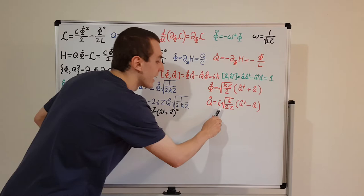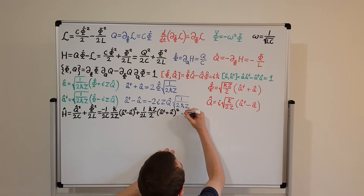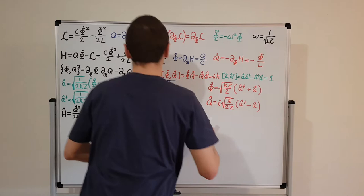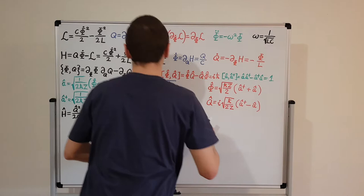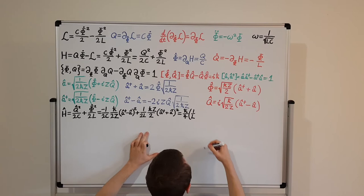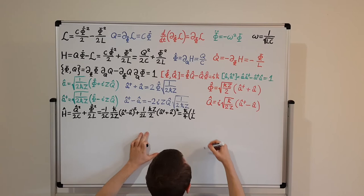Let's rearrange slightly. There's a factor of 2 and 2 giving 4, so we can factor out h-bar over 4. For this term, we're dividing by L and the impedance Z can be written as the square root of L over C. Multiplying, we have 1 over L times Z — and that's the sum (a dagger plus a) squared.